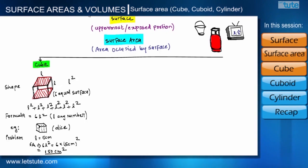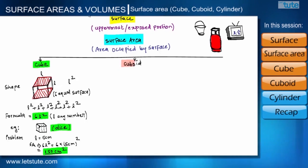Let us solve a problem based on this formula. Suppose we are asked to find the total surface area of a cube having length 5 cm. By using the formula 6L squared, we get 150 cm squared. So we have got the total surface area of a cube having length 5 cm.